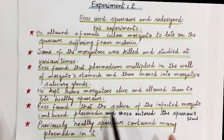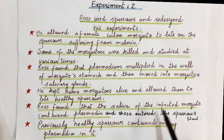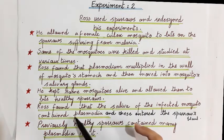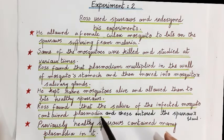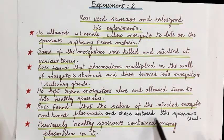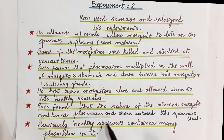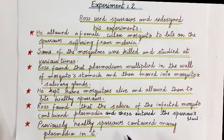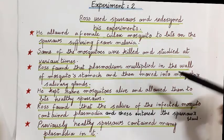Ross found that the saliva of the infected mosquito contained plasmodia. Plasmodia is the plural form of plasmodium. When the mosquito bit a healthy sparrow, plasmodia entered the sparrow's blood through the saliva. Examining the previously healthy sparrows' blood confirmed that they contained many plasmodia. This was Experiment Two.